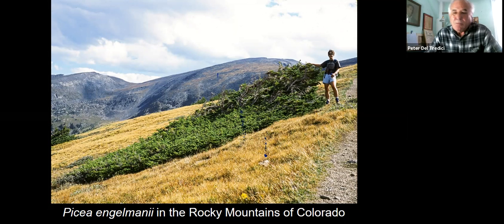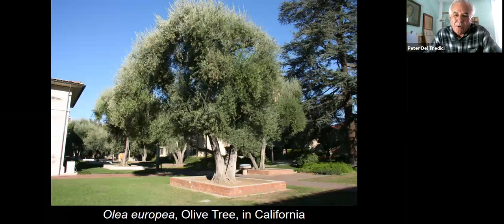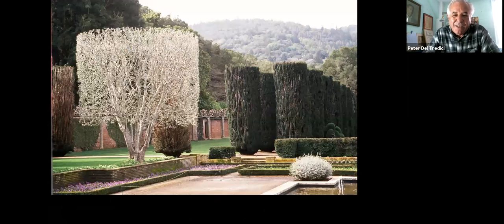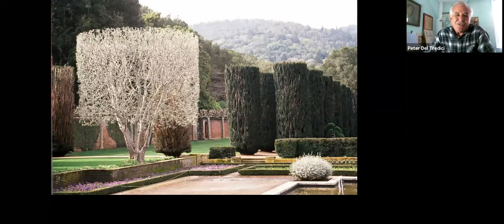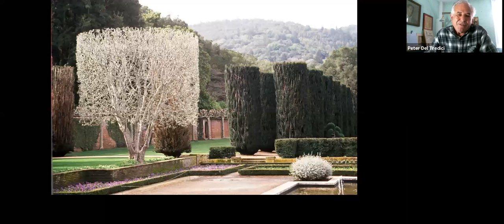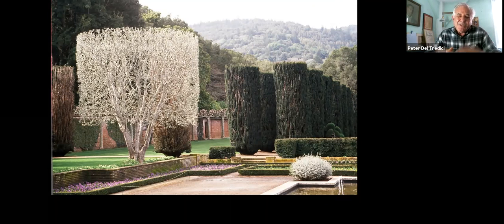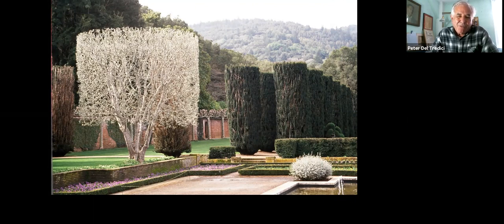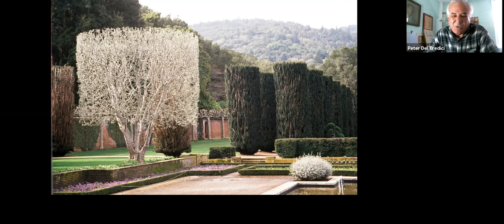Of course, human beings can also influence the form of a tree — this is an olive tree in California. We can insert ourselves into the architecture of the tree; I call this the lampshade look. Yes, you can insert yourself into the form of the tree, but once you're deciding which meristems to leave and which to remove, you can't put those meristems back on. So you then take full responsibility for what happens to that tree over time.